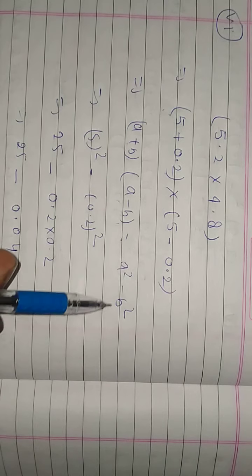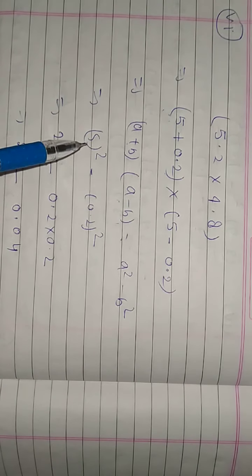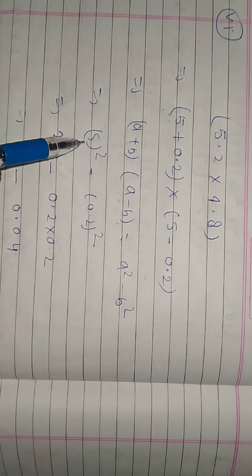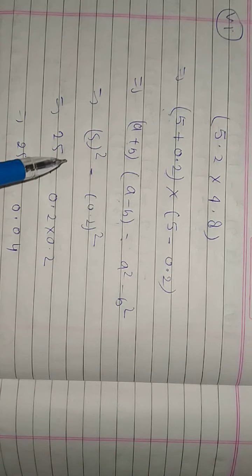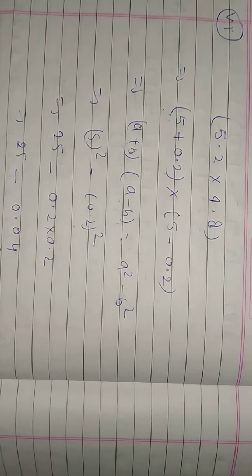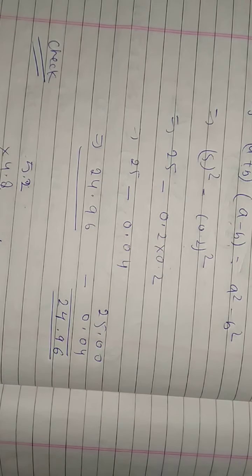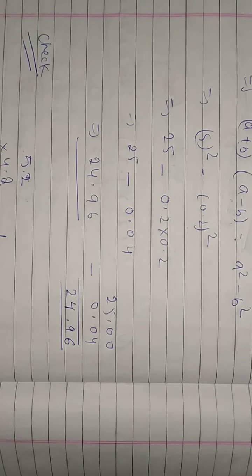Here a square minus b square, where a is 5 and b is 0.2. So 5 square is 25 and 0.2 square is 0.04. This means the answer is 24.96. Thank you.